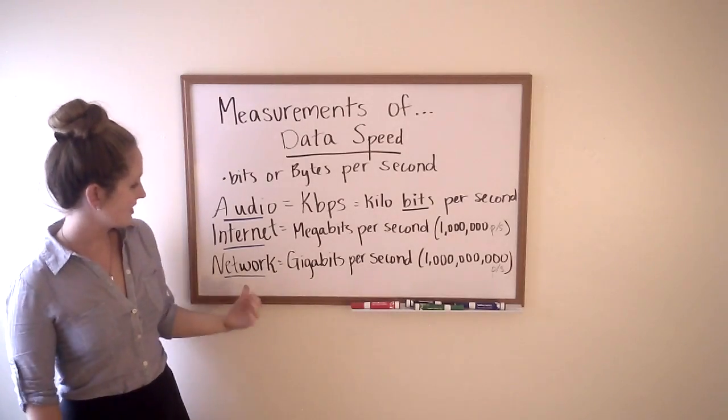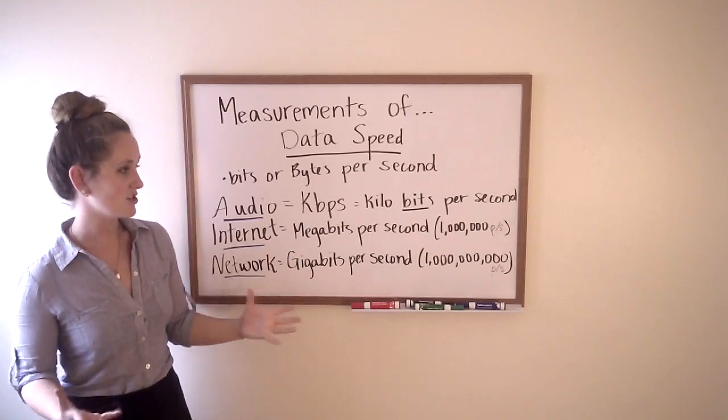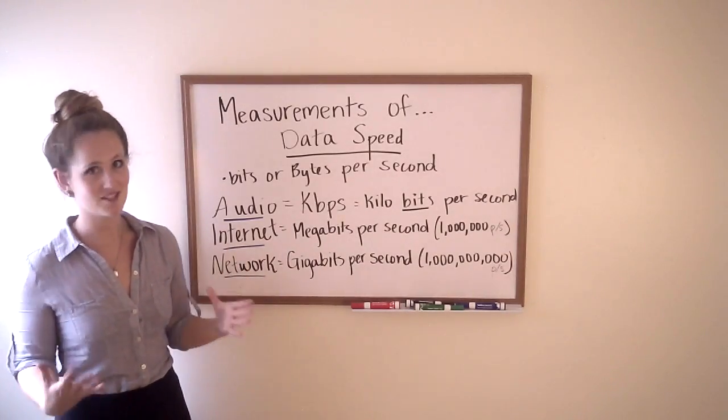The network speed is something we talk about in gigabits per second, so a billion bits per second.